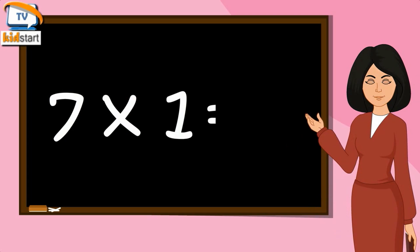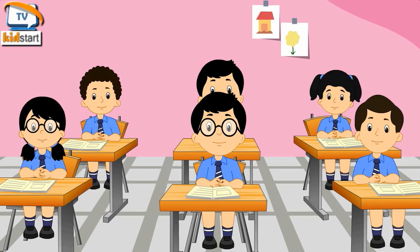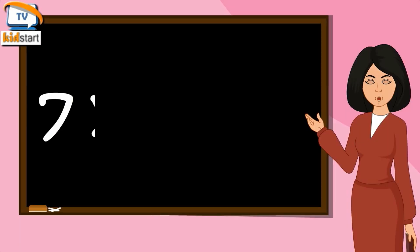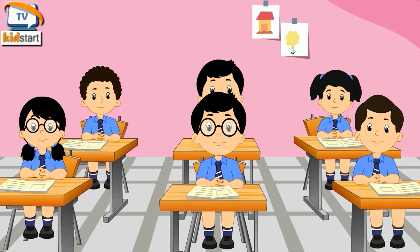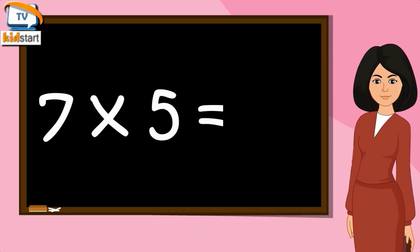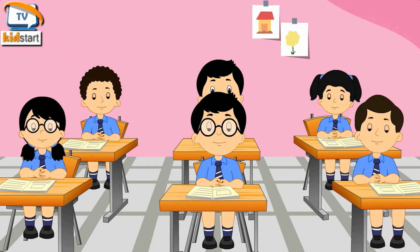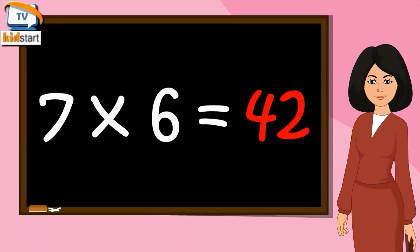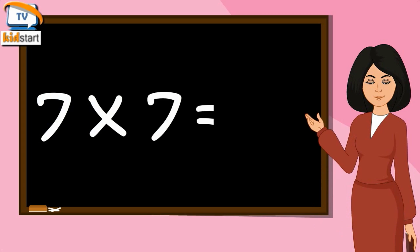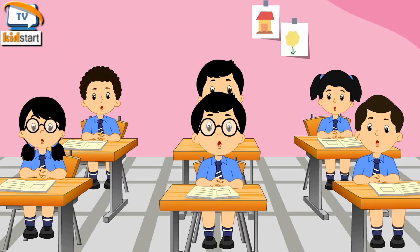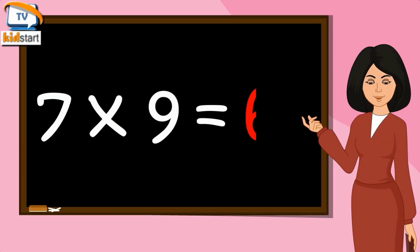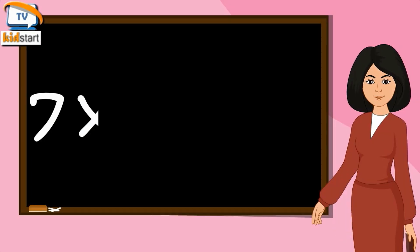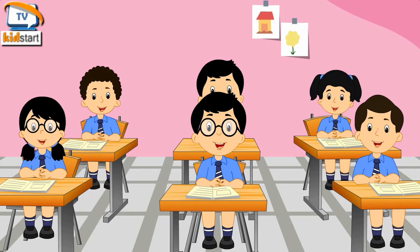Seven ones are seven. Seven twos are fourteen. Seven threes are twenty-one. Seven fours are twenty-eight. Seven fives are thirty-five. Seven sixes are forty-two. Seven sevens are forty-nine. Seven eights are fifty-six. Seven nines are sixty-three. Seven tens are seventy.